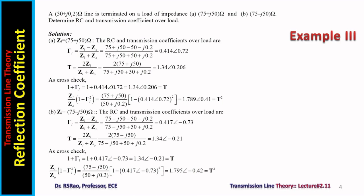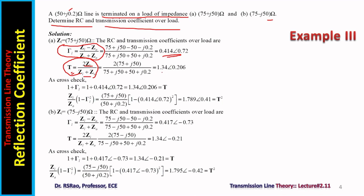Another problem: a 50 + j0.2 ohm line is terminated on a load impedance. Part A: ZL = 75 + j50 ohms; Part B: ZL = 75 − j50 ohms. Determine the RC and transmission quotient over the load. The RC over the load is gamma_L = (ZL − Z₀)/(ZL + Z₀) — this is the standard formula. Substitution gives gamma_L. The transmission quotient is T = 2ZL/(ZL + Z₀). Substitution gives the transmission quotient. Cross-checks are: (1) 1 + gamma_L = T, and (2) (ZL/Z₀)(1 − gamma_L²) = T².